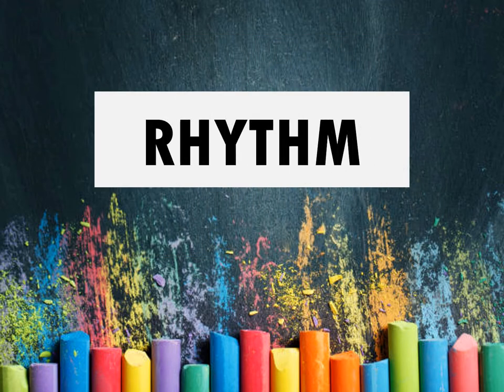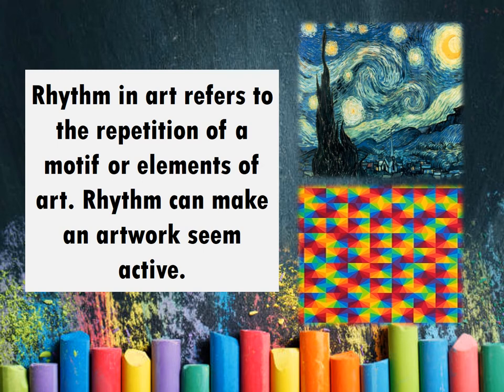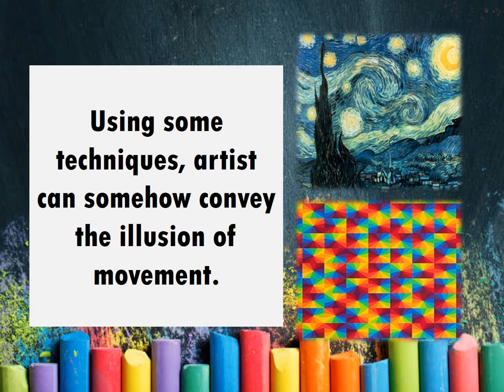Let's start with rhythm. Rhythm in art refers to the repetition of motifs or elements of art. Rhythm can make an artwork seem active. Rhythm is present in an artwork if there is a repetition in the elements of art, such as lines, shapes, colors, and texture. Using some techniques, artists can somehow convey the illusion of movement. As you can see on the given example picture, that is an artwork that has rhythm, and because of the technique that the artist uses, it seems that the artwork is moving.